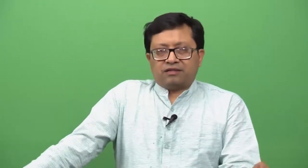I will not solve the problem but only give results. The dataset is taken from the Indian financial market. Companies from 2002, 2003, and 2004 are considered — this work was done on those data sets. The total number of companies in these respective years are 125, 147, and 144, giving a combined total of 416.